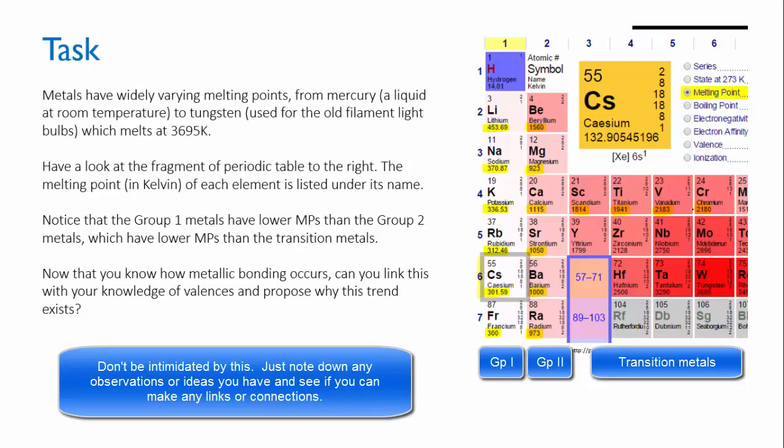I'd like you now to think about how metallic bonding occurs and then link that with your knowledge of valences and propose an explanation for why this trend should exist.